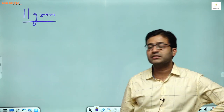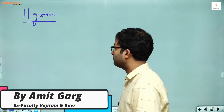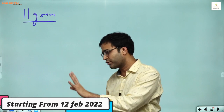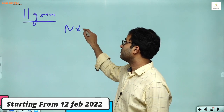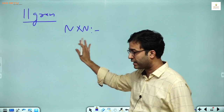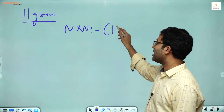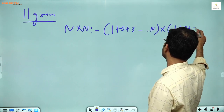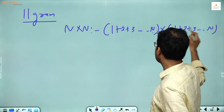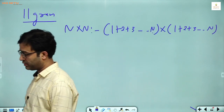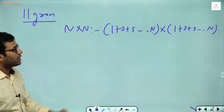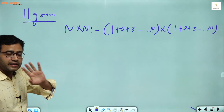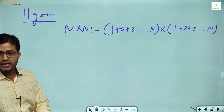Parallelogram — opposite sides are parallel and equal. Here I will not give you a new formula for parallelogram. Rectangle formula — if it is an N by N figure, the rectangle formula is: bracket start 1 plus 2 plus 3 up to N, into second bracket start 1 plus 2 plus 3 up to N — sum of first N natural numbers into sum of first N natural numbers. Parallelogram and rectangle have exactly the same formula.